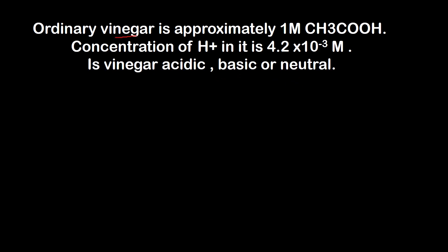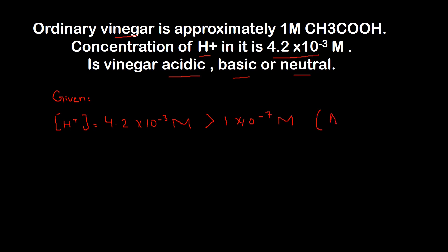Vinegar mein hydrogen ion ki concentration given hai aur yeh equal hai 4.2×10⁻³ molar. Humse poocha gaya hai kya vinegar acidic, basic ya neutral hai. Hum isko simply find out kar sakte hain hydrogen ion concentration ki help se. Jab kabhi hydrogen ion ki concentration greater hogi 1×10⁻⁷ molar se, toh is case mein yeh solution acidic solution kehlata hai. Yahaan par jo vinegar hai, yeh acidic solution hoga kyunki concentration hydrogen ion ki greater than 1×10⁻⁷ molar hai.